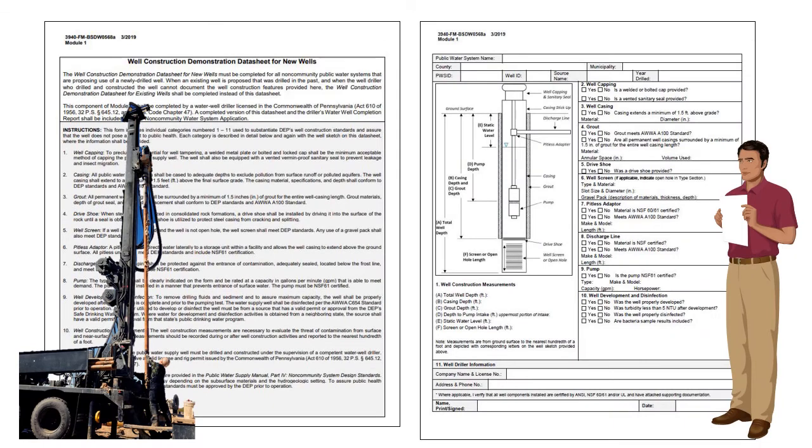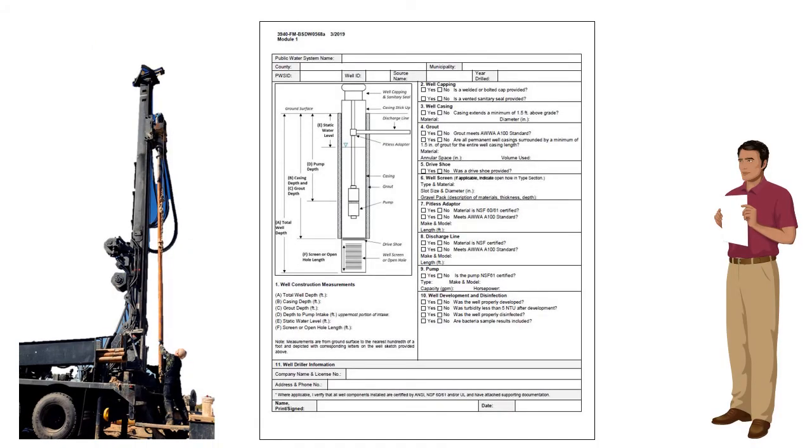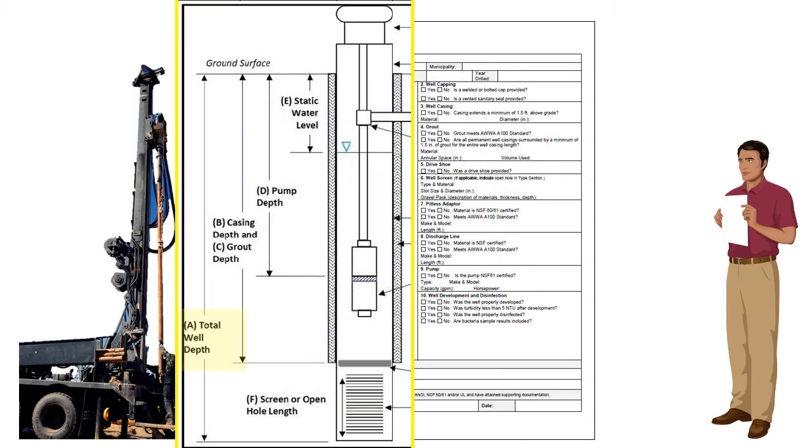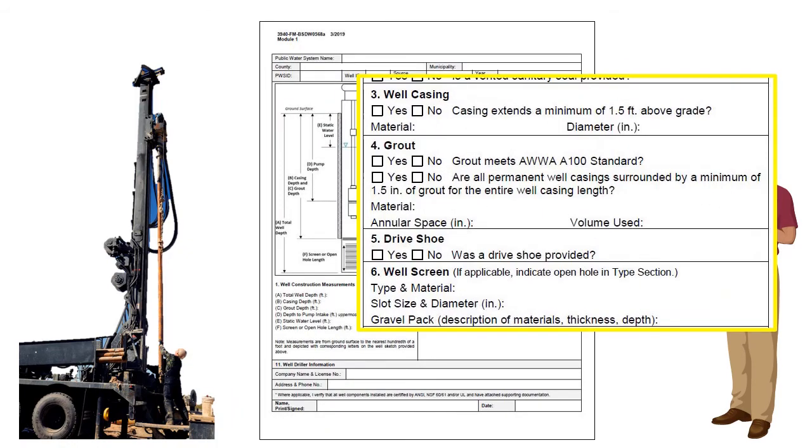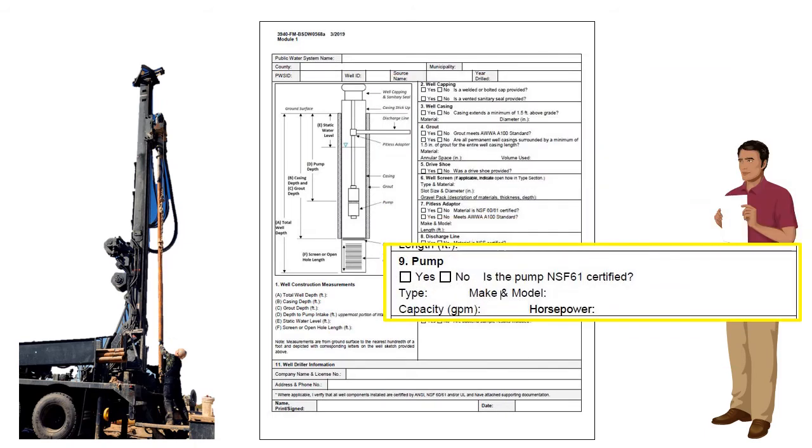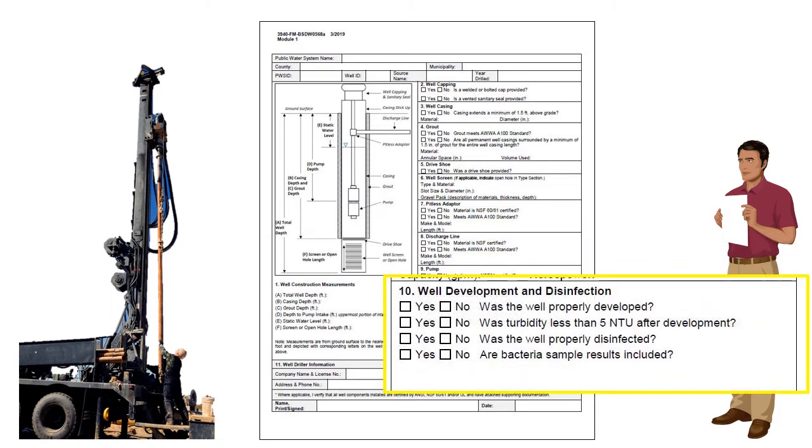The form and well construction sketch provide information necessary for the DEP review staff to assess if the well is constructed to standards and in a manner that is protective of public health. Specifically, the form asks for details on the following well construction features: well construction measurements of total well depth, casing and grout depth, depth to pump intake, static water level, and depth to screen or open interval; well capping, well casing, grout, drive shoe and screen, pitless adapter, discharge line, pump, and whether the well was properly developed and disinfected and any bacteria or turbidity issues.